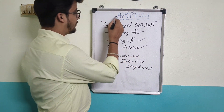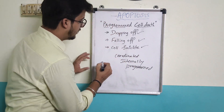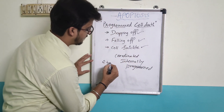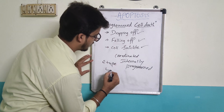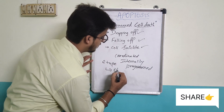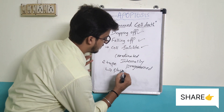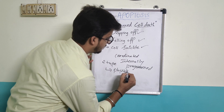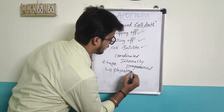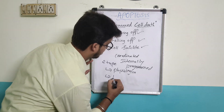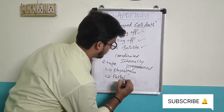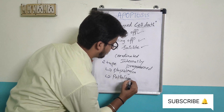In apoptosis, there are two types. One is physiological apoptosis and the second one is pathological apoptosis.